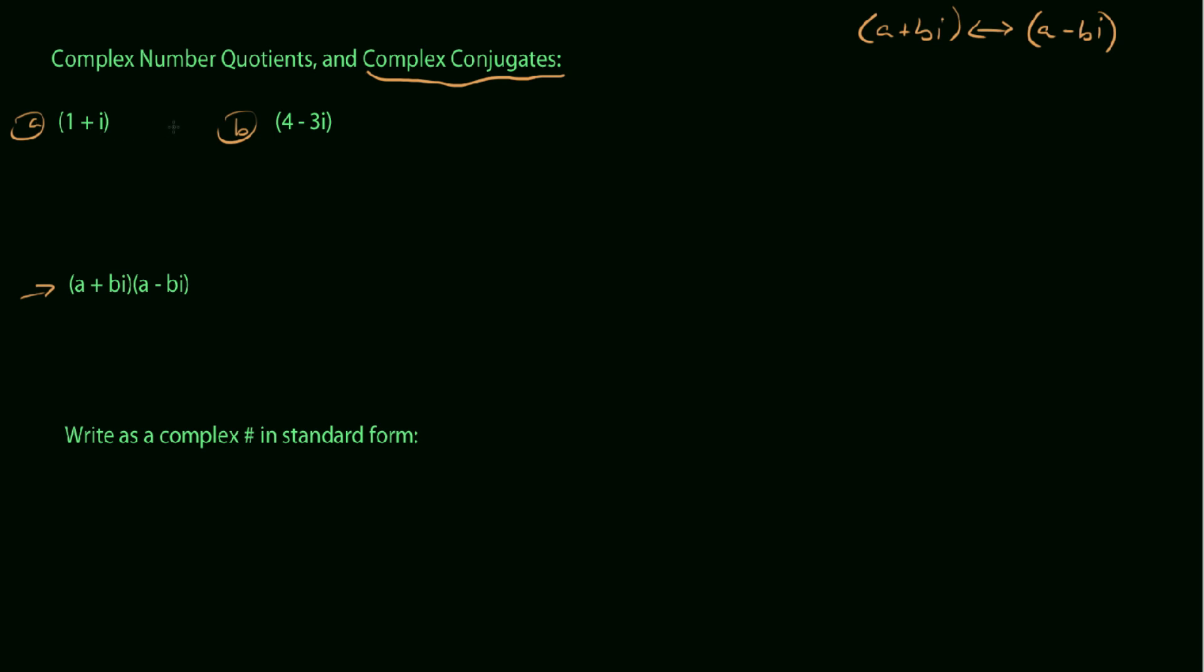One is 1 plus i and say this one over here is 4 minus 3i. But we'll start by just saying, well, what would happen if we multiply these numbers by their complex conjugate? First of all, what would their conjugates be? We notice we have 1 plus i, its conjugate would be 1 minus i.